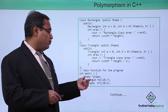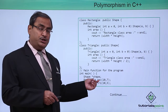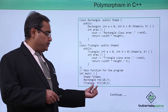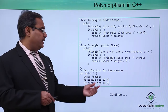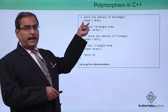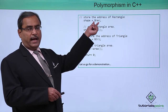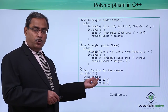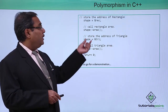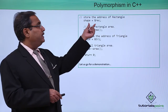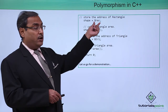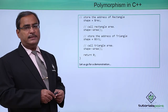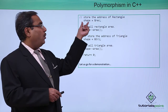From main, we have defined one pointer object under the class Shape — the object name is also shape. A Rectangle class object is initialized through its constructor, and a Triangle class object is initialized similarly. Now shape is assigned with the address of the rectangle object rec. Shape is a pointer type of variable pointing to the Shape class object, and now shape is getting assigned with the address of the rec object. So shape implies area — we are expecting that the Rectangle area function will be called.